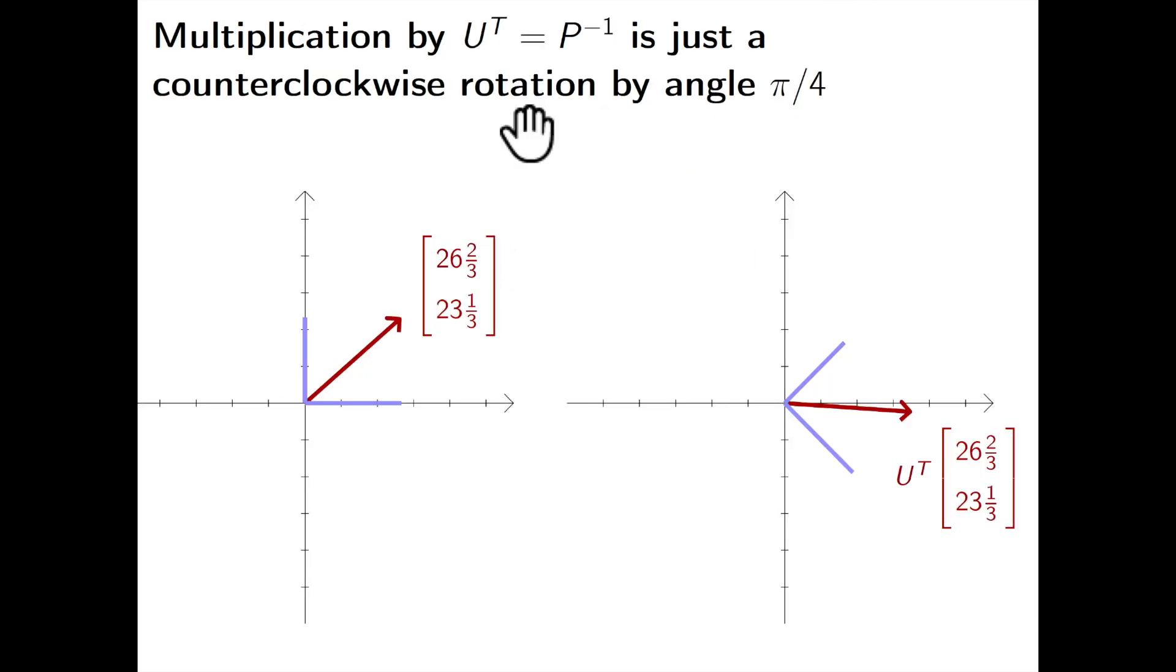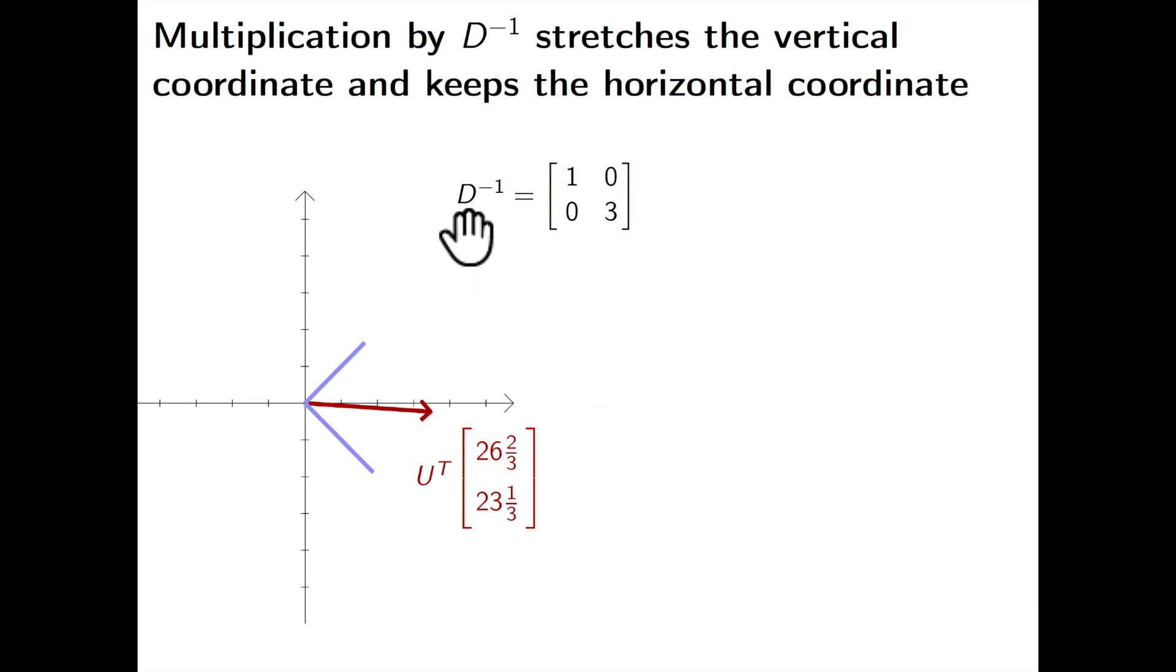And let's see geometrically how that goes. So first we multiply by U transpose. So here is the right hand side vector. And multiplied by U transpose actually means rotation of the vector by angle pi over 4. So here you see the resulting vector after we multiply by U transpose. Then the next step is multiplying by the diagonal matrix. And that will just stretch the second coordinate by factor of 3. So you see there's a stretching vertically by a factor of 3. And horizontally everything stays the same. So this is kind of a component-wise operation because D minus 1 is a diagonal matrix.